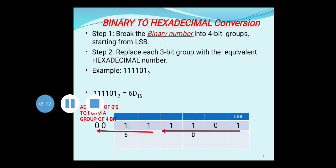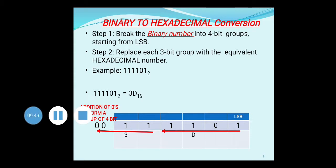After grouping, replace each 4-bit group with its equivalent hexadecimal number from the 4-bit binary table. Here, 1101 represents the alphabet D — it is the number 13, and since 13 doesn't exist as a single digit in hexadecimal, it is represented as D. Then, 0011 represents 3. There was a mistake earlier — the correct final answer is 3D.